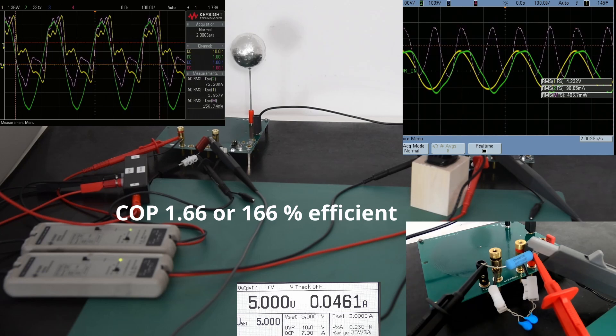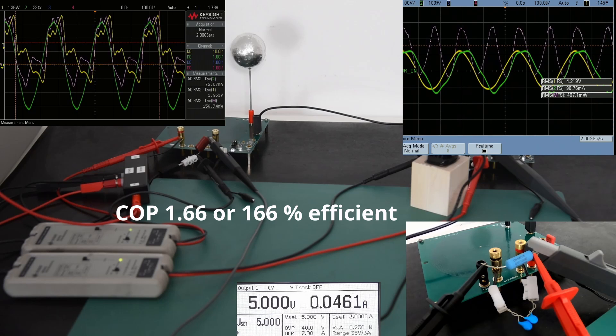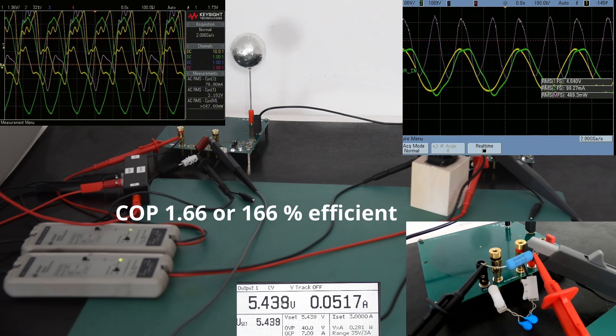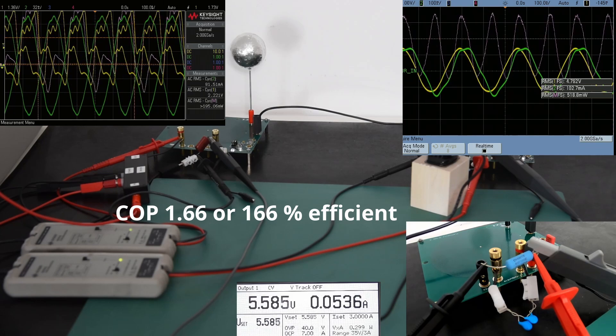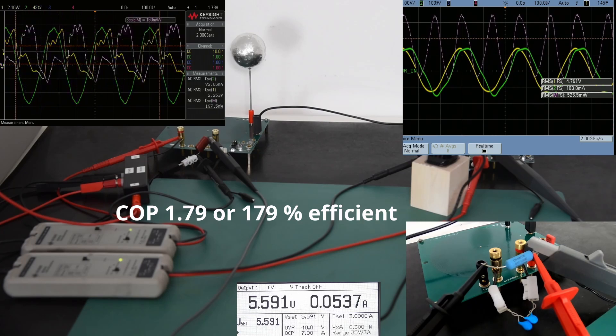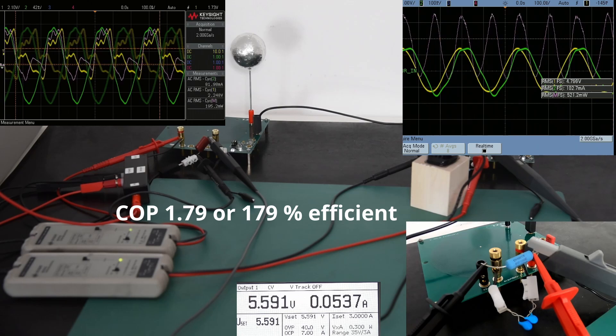I will put the calculation of the ratio on top on the screen. Let's go to 300 mW power delivery. At 300 power delivery, I consume on the input side 169 mW. On the output side I have 524 mW.